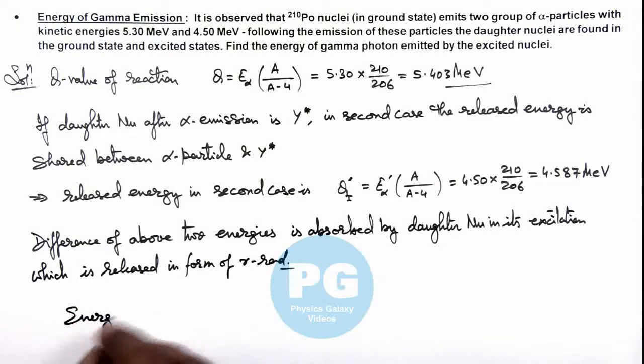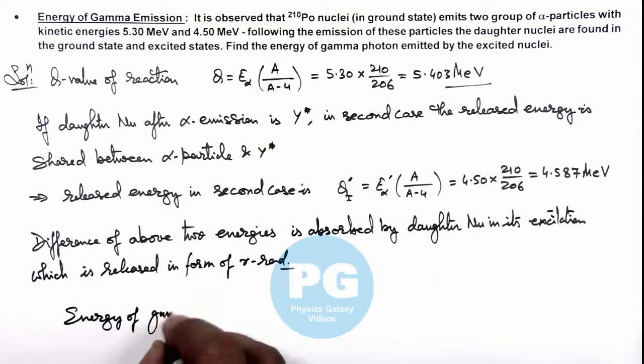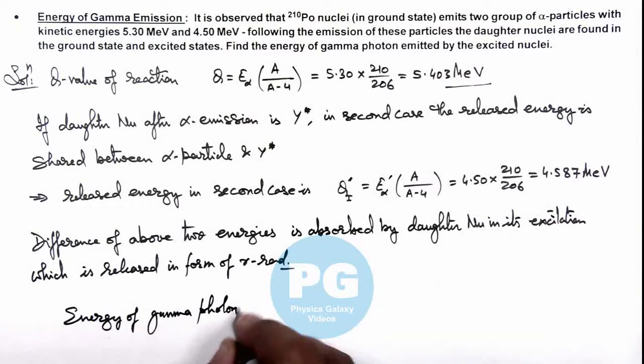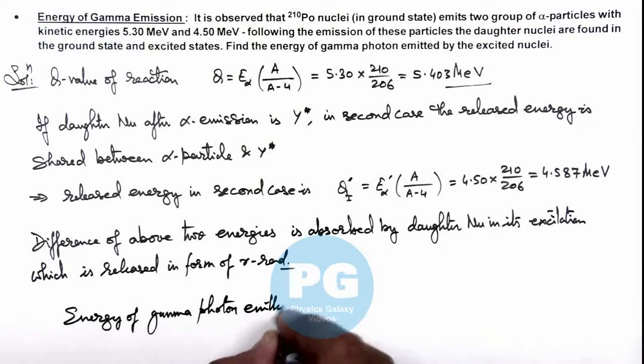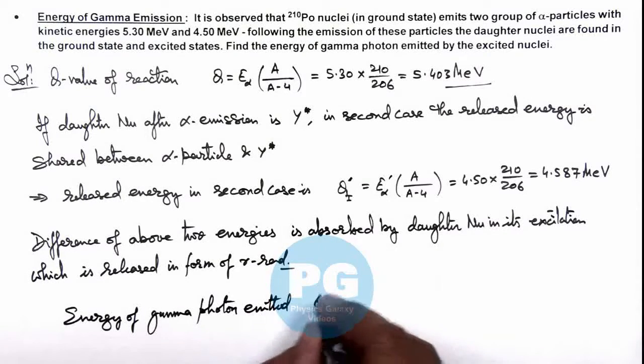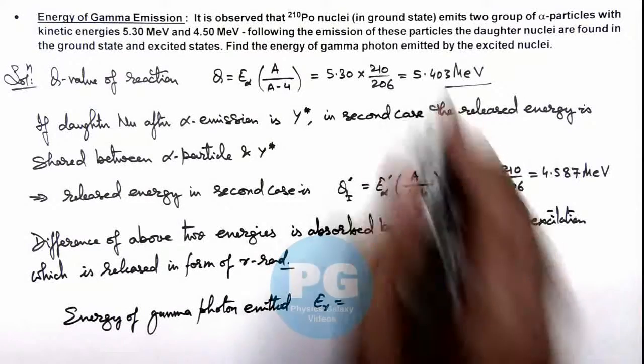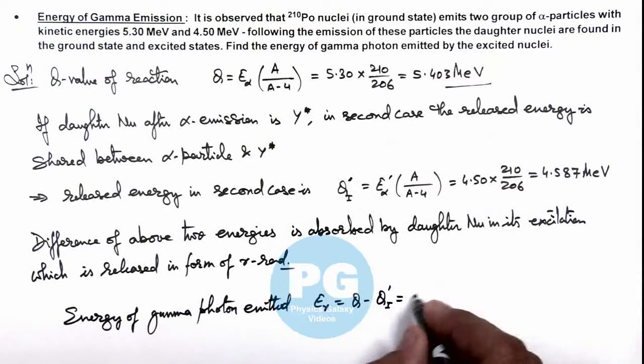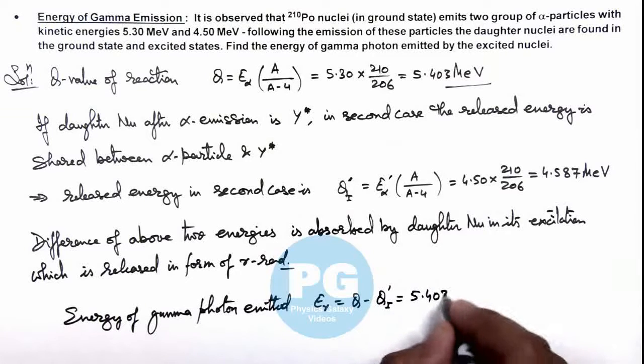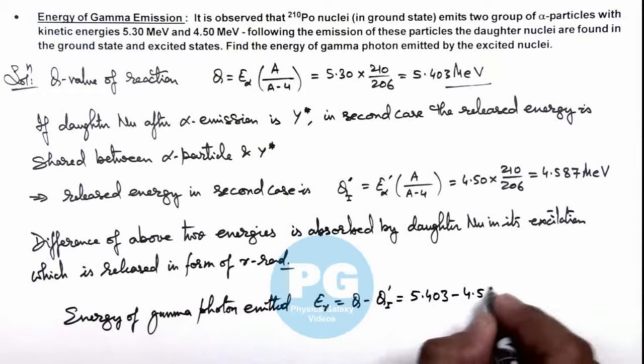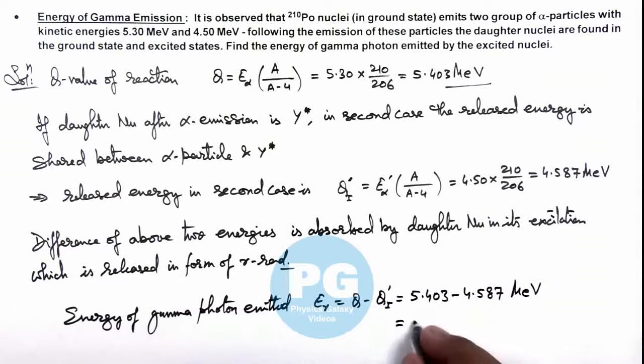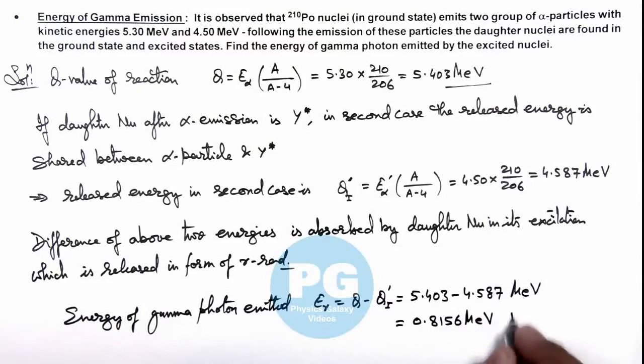Energy of gamma photon emitted can be given as E_γ = Q - Q'. That is 5.403 - 4.587 MeV. On simplifying, this gives us 0.816 MeV, which is the result of this problem.